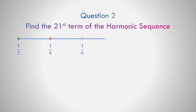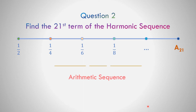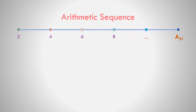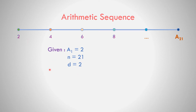Question number 2: Find the 21st term of the harmonic sequence 1/2, 1/4, 1/6, and 1/8. The reciprocals give the arithmetic sequence: 2, 4, 6, 8. The first term is 2, the number of terms is 21, and the common difference is 4 minus 2, so the common difference is 2.